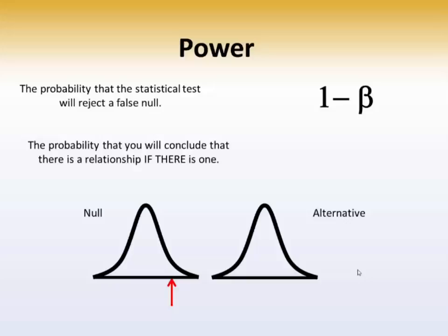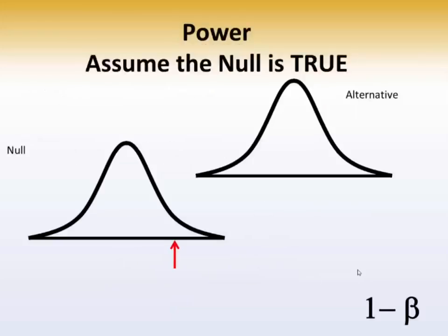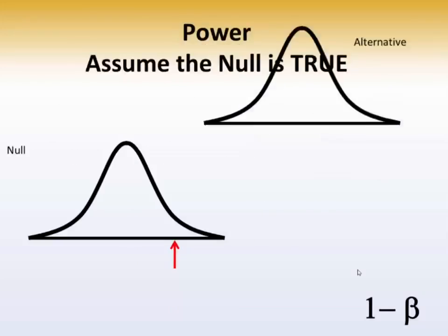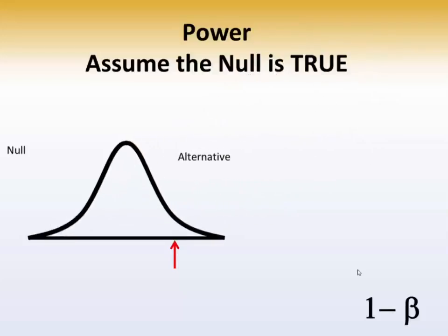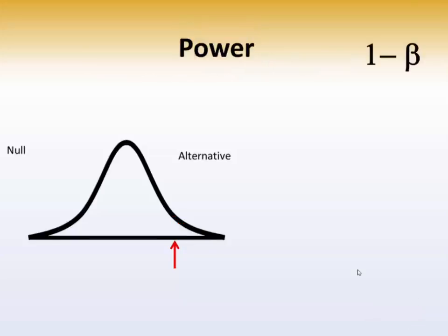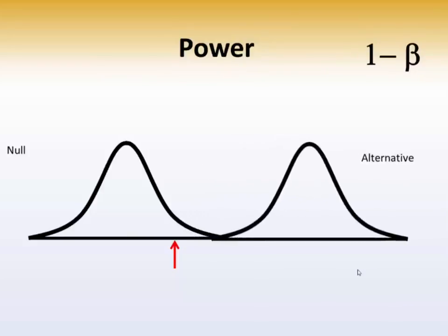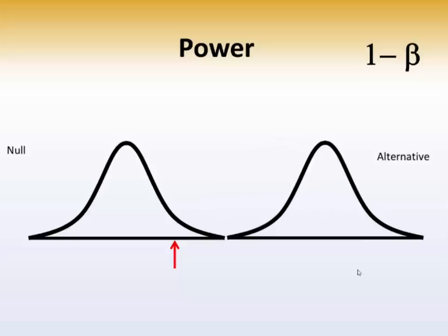Unfortunately, the distributions aren't always this disparate. For example, here's the null hypothesis and the alternative hypothesis. If the null hypothesis is true, the alternative hypothesis, as we've shown numerous times, would be coincident with the null hypothesis and you would not reject the null hypothesis. But there are other alternative distributions — notice the alternative can be quite a bit of distance away from the null hypothesis.